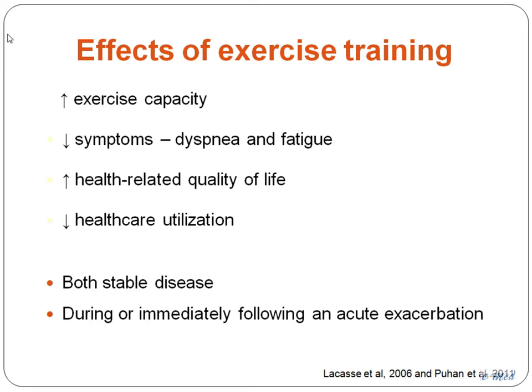There are now 31 randomised controlled trials demonstrating the effectiveness of exercise training in stable patients, and 9 following an exacerbation — the evidence is Level 1A, as strong as it gets. Aerobic exercise training increases exercise capacity, reduces symptoms of dyspnea and fatigue, improves health-related quality of life, and reduces healthcare utilisation. It's one of the only therapies where it will cost you less to implement than you will save. This evidence is very robust in both stable disease and immediately following an exacerbation.